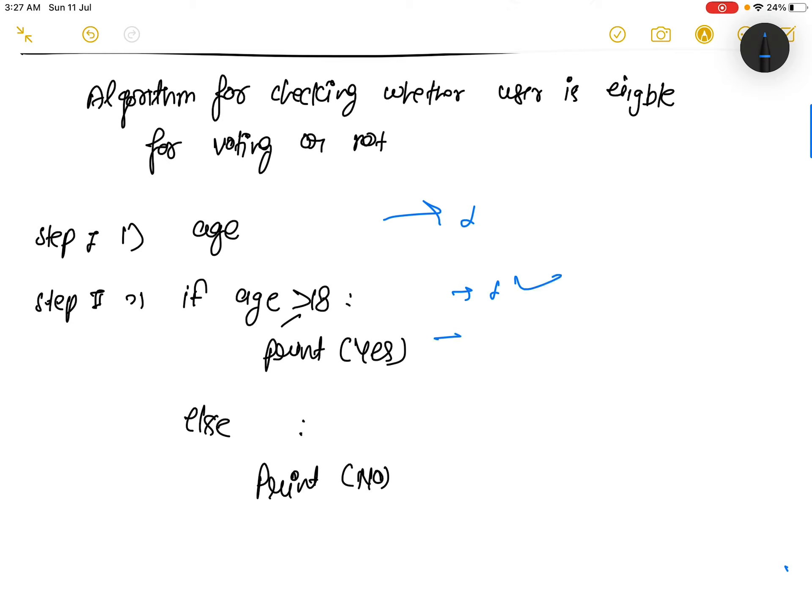This is also executed one time and the process will break. So the total running time in that case is what? Three. Now suppose the user is less than or any other case.